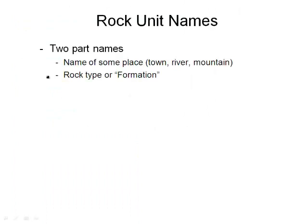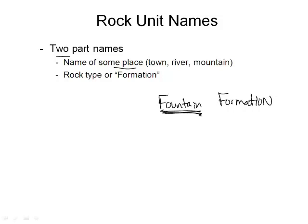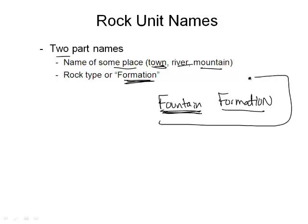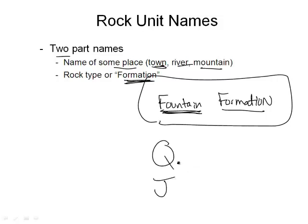When we talk about rock unit names, they have two-part names. For example, the red rocks you find down in Colorado Springs and up in Denver at Red Rocks State Park amphitheater — that's called the Fountain Formation. It was probably named near the town of Fountain, and they use the word 'formation.' And then they'll have a letter — like Q for the Quaternary period or J for the Jurassic period — to denote the name of that particular rock unit.